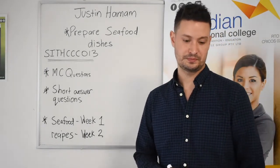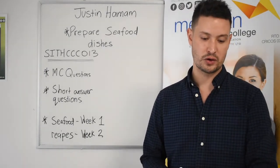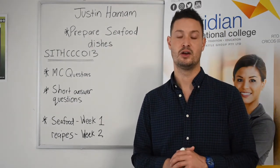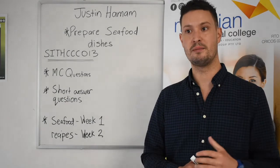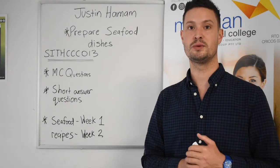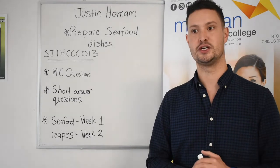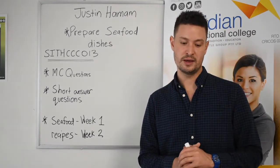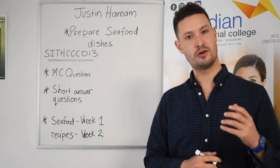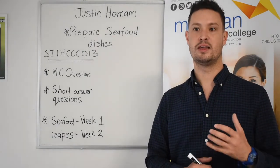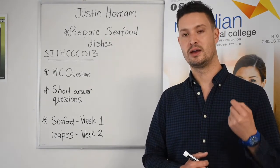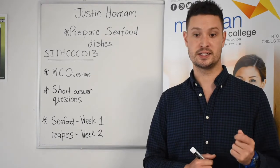In Task Two, you'll be looking at another recipe — a crumbed prawn cutlet. One question, for example, will ask you: what method of cookery are you going to use to cook this dish? Another question will be: what is an appropriate garnish? When you think about garnish, think about the dish itself — does it complement the dish, and also think: can I eat this garnish? That's very important.